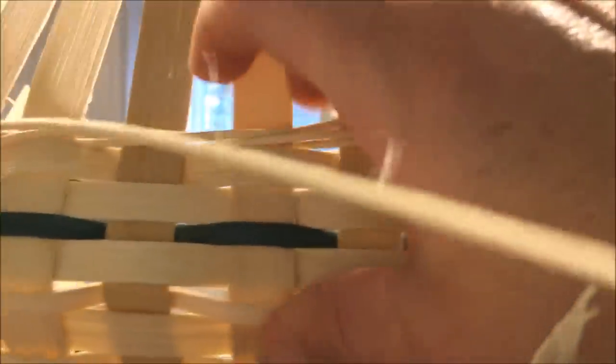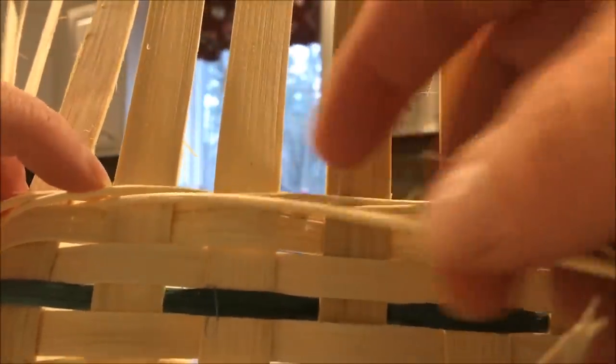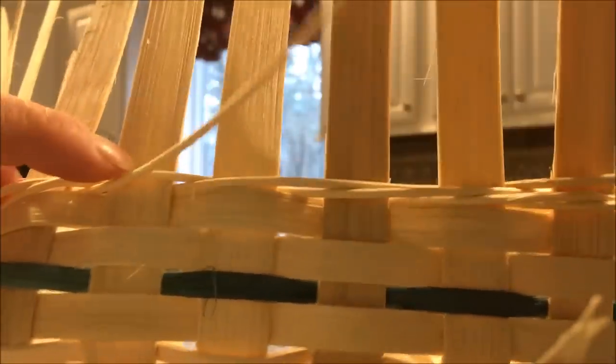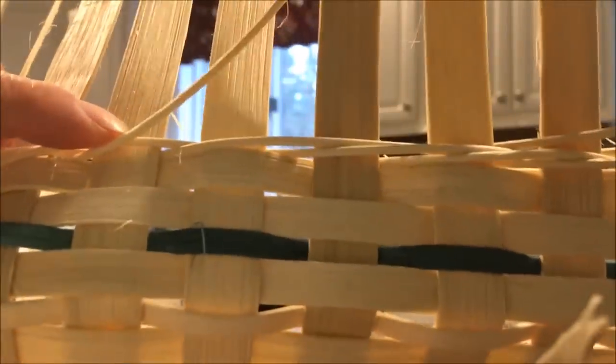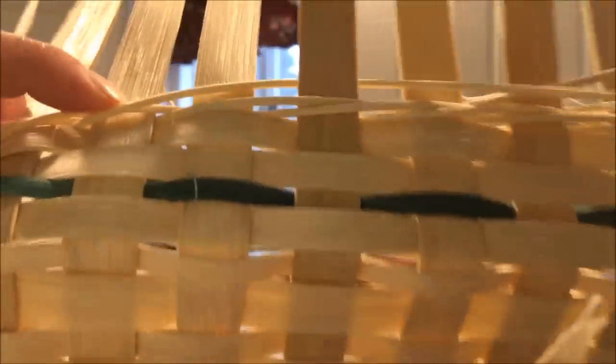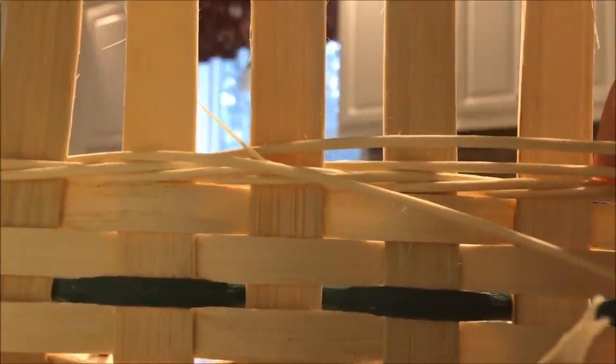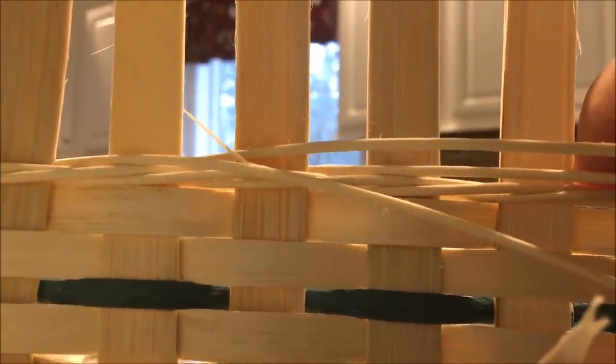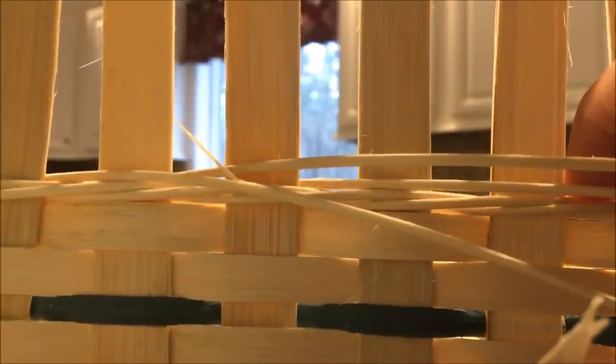Slide this over so you can see - over two, behind one, and back out to the front. So now you have completed one row of three rod whale or triple twining. Now we're going to do the arrow portion. The arrow is basically three rod whale but it just flips the three rod whale upside down to form an arrow.